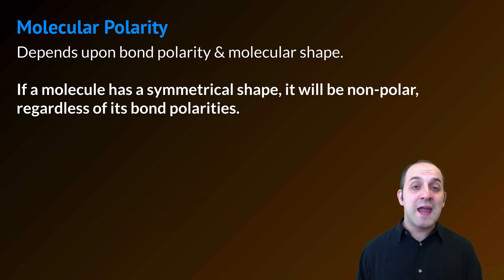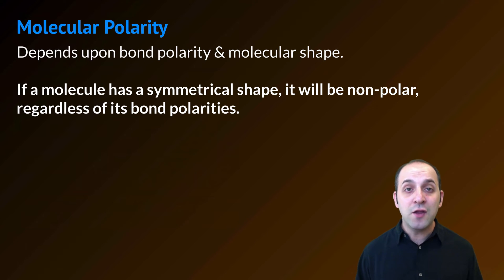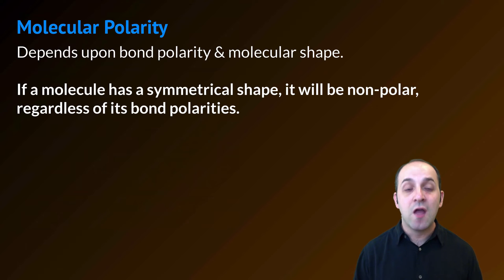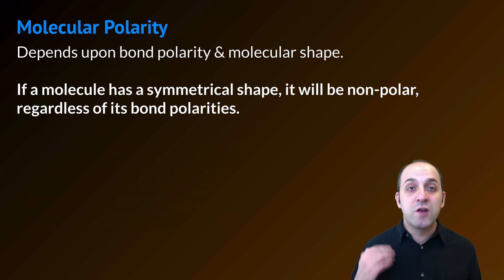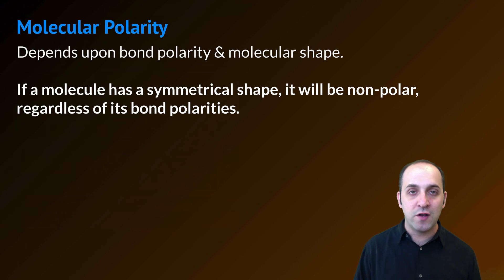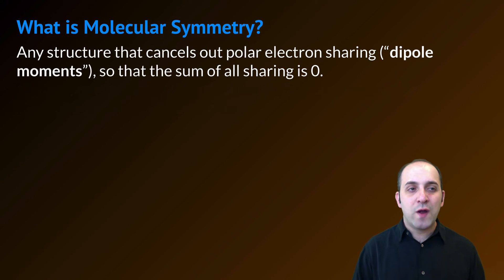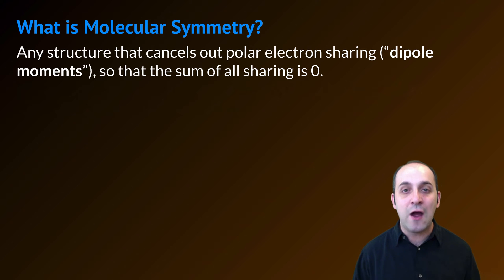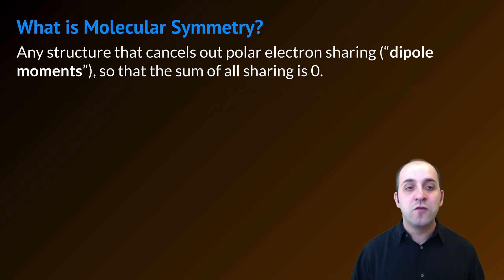Molecular polarity is going to take the work that we did when we determined bond polarity and build on it, because a molecule's polarity depends not only upon its bond polarity but also upon its molecular shape. Specifically, if a molecule has a symmetrical shape, it is going to be a nonpolar molecule regardless of what its bond polarities are. So the natural question is: what is molecular symmetry? Molecular symmetry is any structure that cancels out polar bonds — what we call the dipole moments of an atom — so that the overall sum of the sharing is 0.